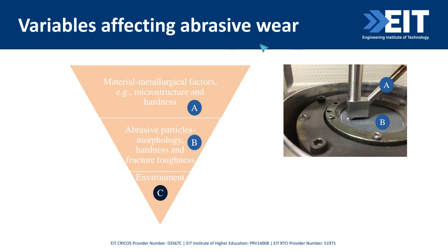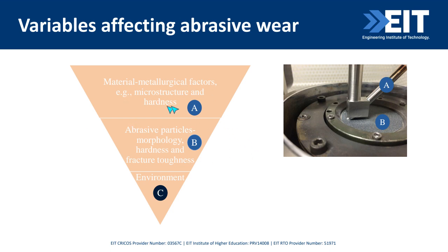The factors affecting abrasive wear are: (A) material metallurgical factors — microstructure and bulk hardness; (B) abrasive particle factors — particle size, fracture toughness, and hardness; and (C) the environment — temperature and humidity. The environment contributes the least. Abrasive particles contribute 20–30%. The material is the dominant factor. For the first objective, we kept hardness constant and changed the microstructure to understand how different microstructures affect abrasive wear.